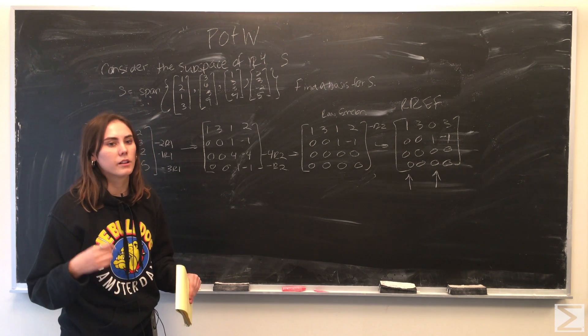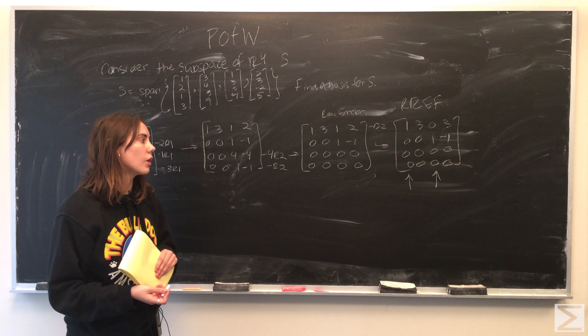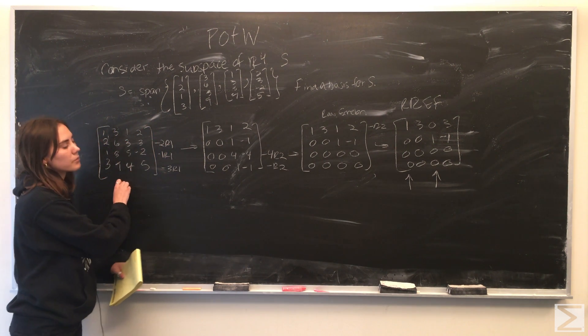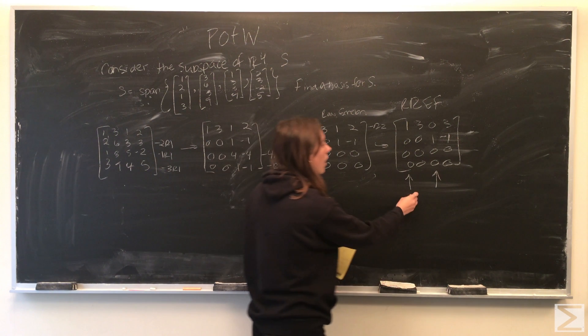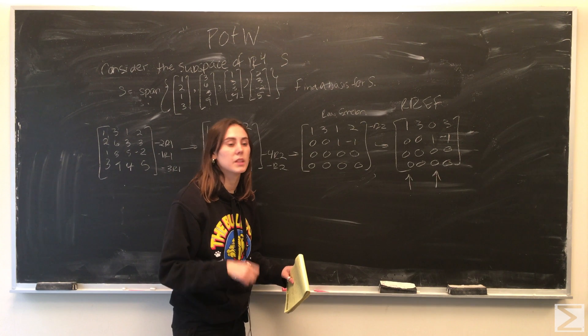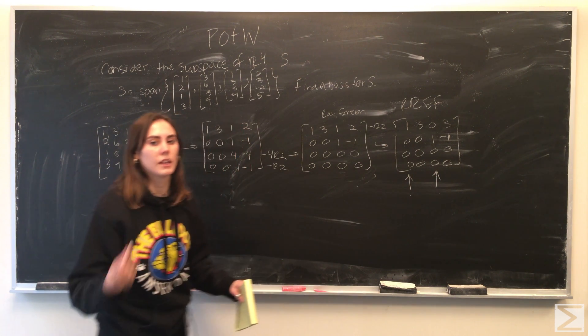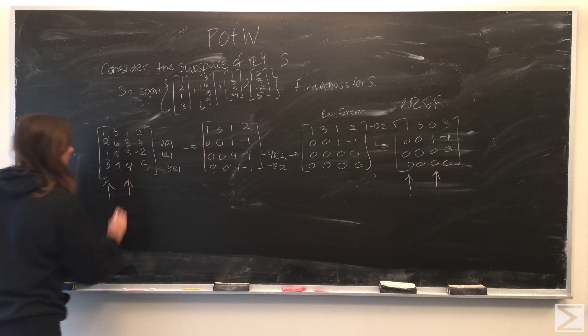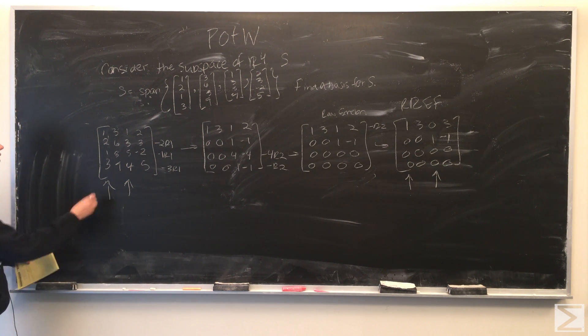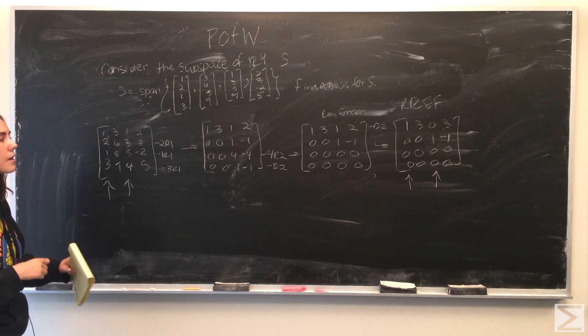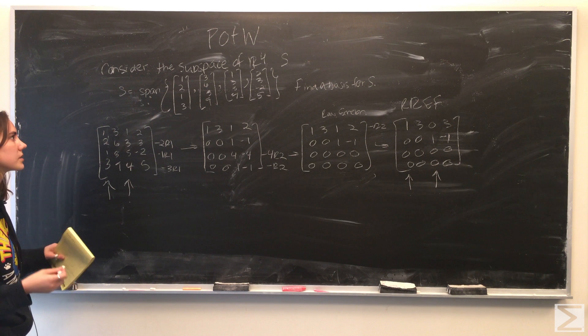So using the linearly independent columns, we can find the basis from the original matrix that we wrote. So since these two columns are linearly independent of each other, what that tells us is that those two columns also have to be linearly independent of each other in the original matrix. So in this original matrix, column one [1,2,1,3] and column three [1,3,5,4] are linearly independent of each other and must be a basis for the subspace S.